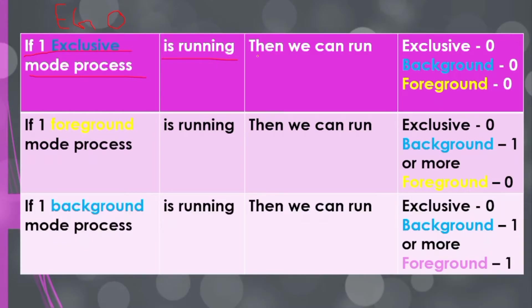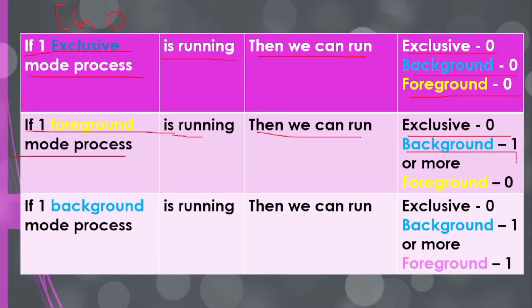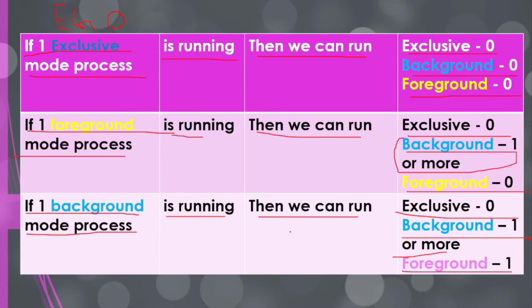If one exclusive mode process is running, then we can run zero exclusive, zero background, and zero foreground — we can't run any other process. If one foreground mode process is running, we can run one or more background processes, zero exclusive, and zero additional foreground. If one background process is running, we can run one or more background processes and one foreground.